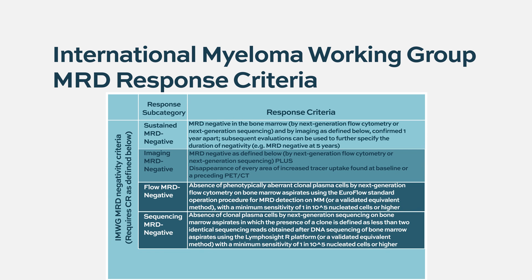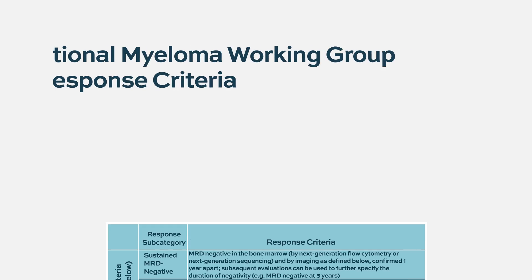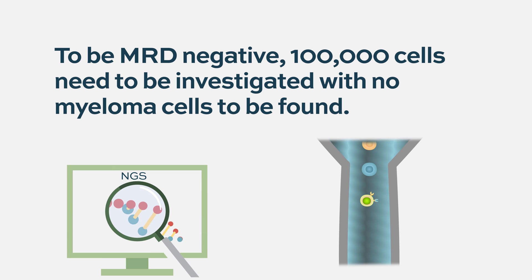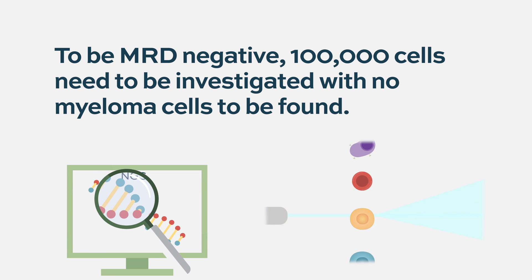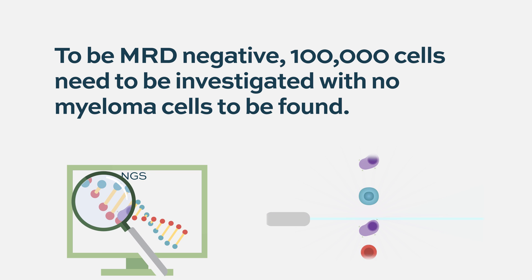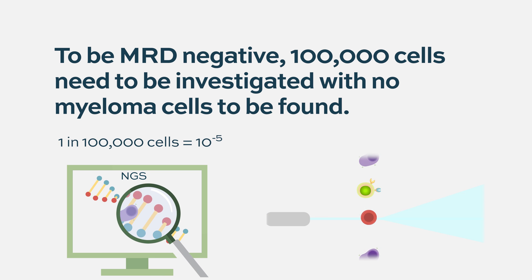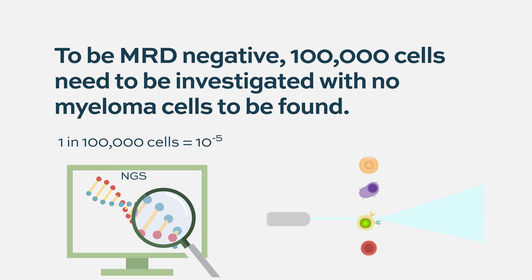The definition comes from work published by the International Myeloma Working Group and was also implemented in the NCCN guidelines. It states that you have to rule out one myeloma cell in one hundred thousand investigated cells — another way of saying that is 10 to the minus 5 negativity.